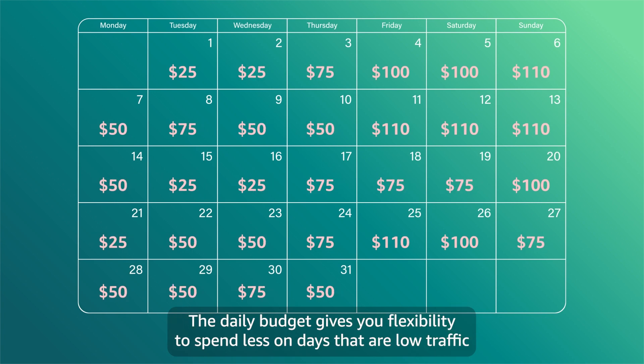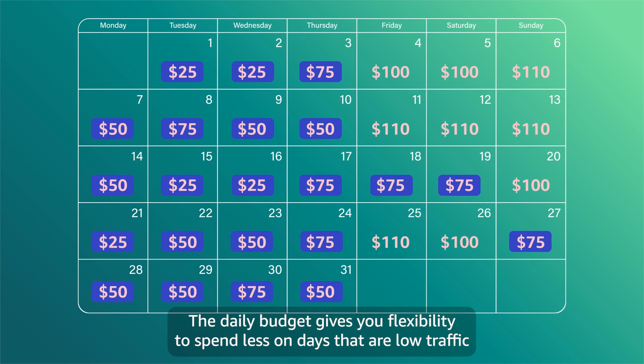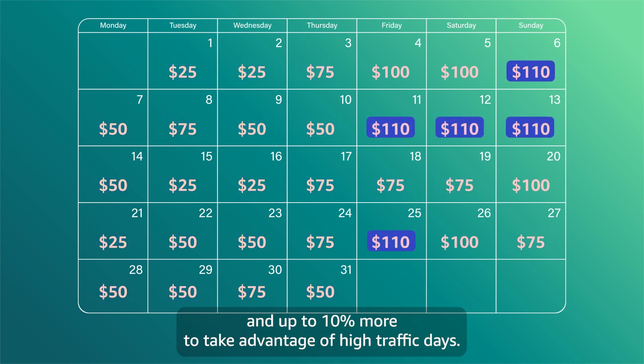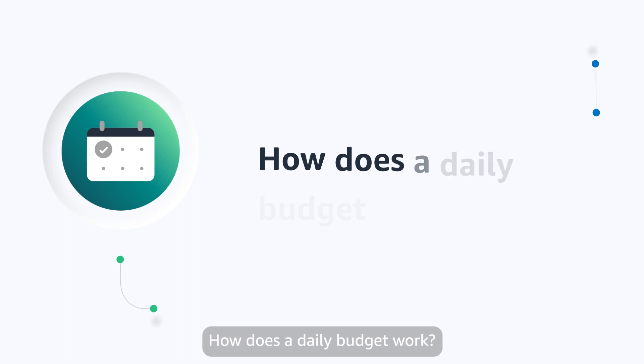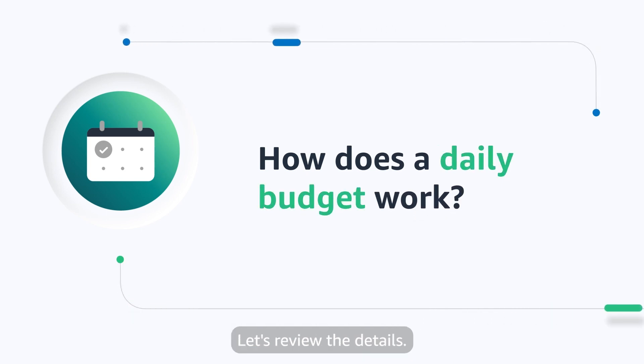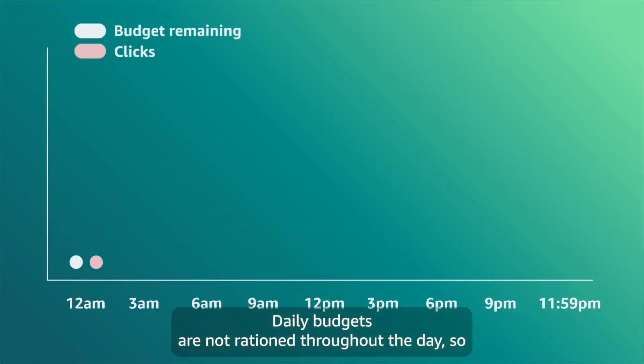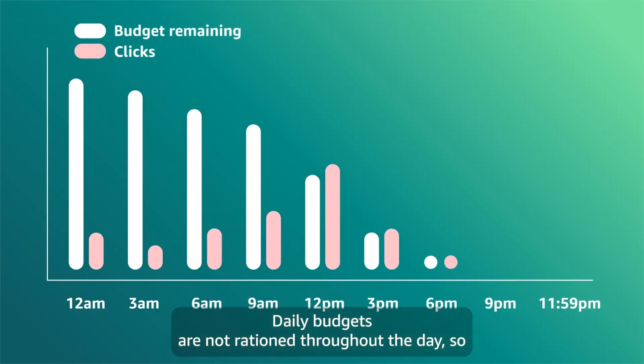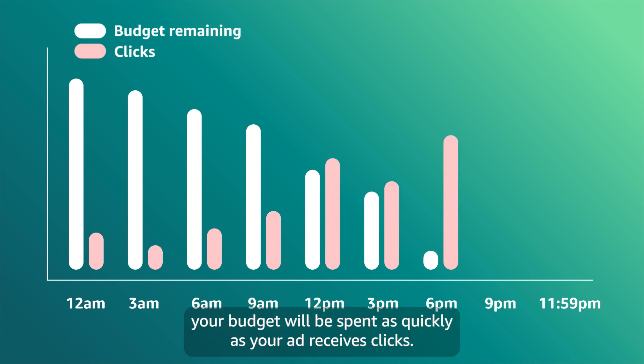The daily budget gives you flexibility to spend less on days that are low traffic and up to 10% more to take advantage of high traffic days. Daily budgets are not rationed throughout the day, so your budget will be spent as quickly as your ad receives clicks.